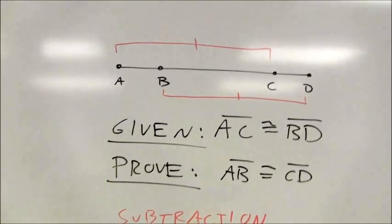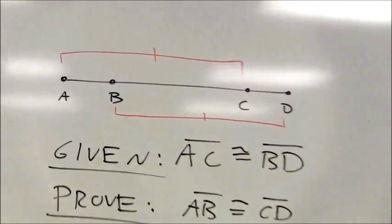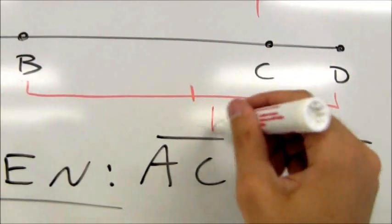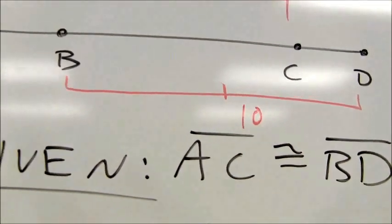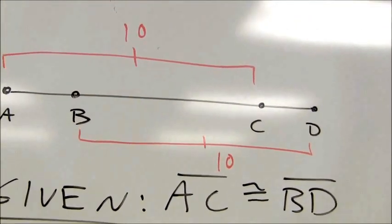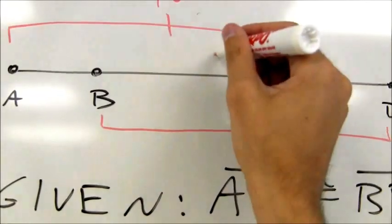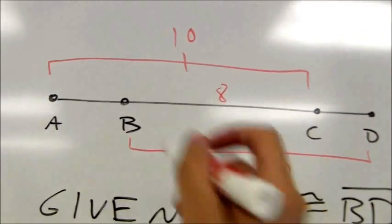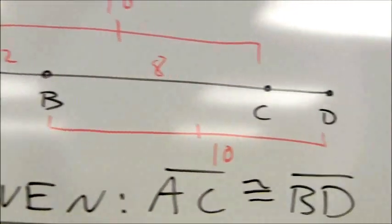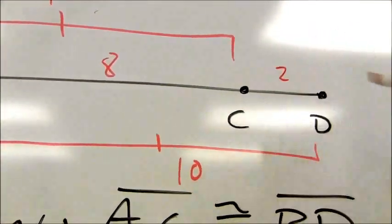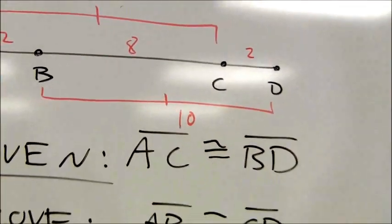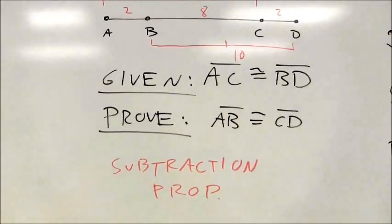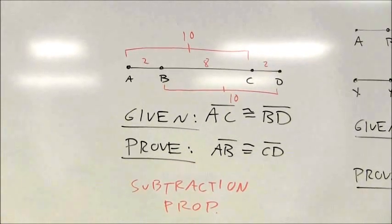If you want to try it with numbers, take your given values — say maybe AC has a length of 10 and BD has a length of 10. It doesn't give us any measure for that shared middle part, but maybe I can call that 8. I would take 10 minus 8 to find out that AB was 2, and I would take 10 minus 8 to find out that CD was 2. So I'm subtracting in both cases. Again, that's an example of the subtraction property.